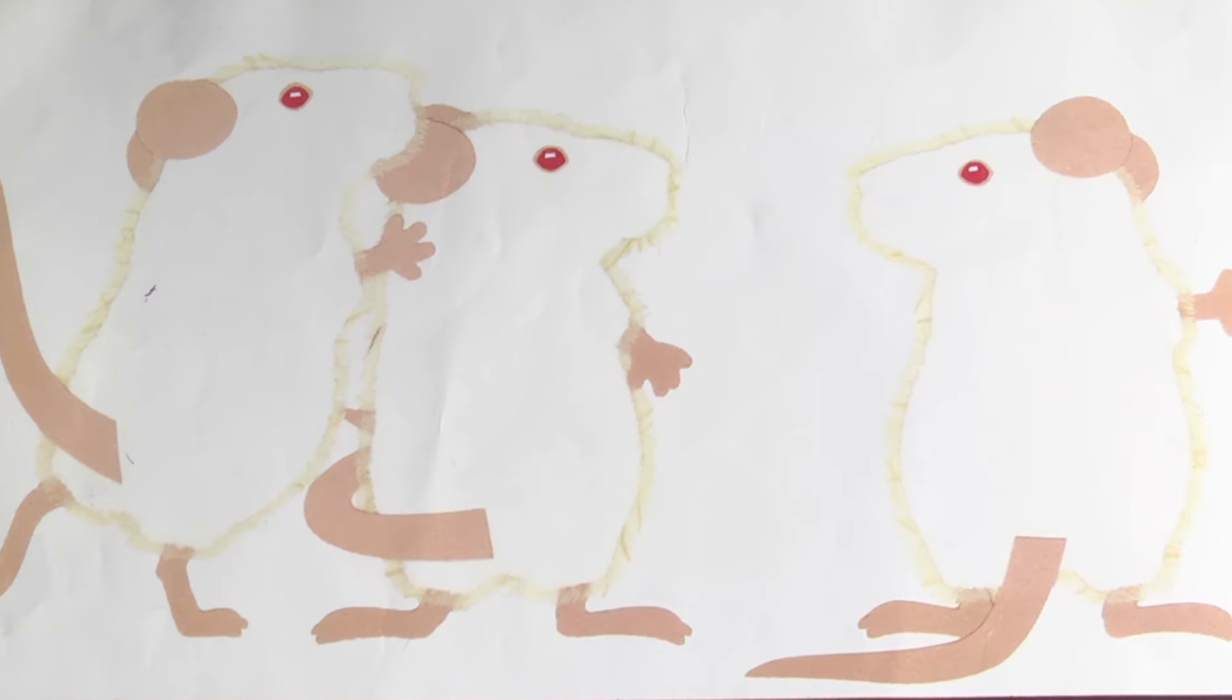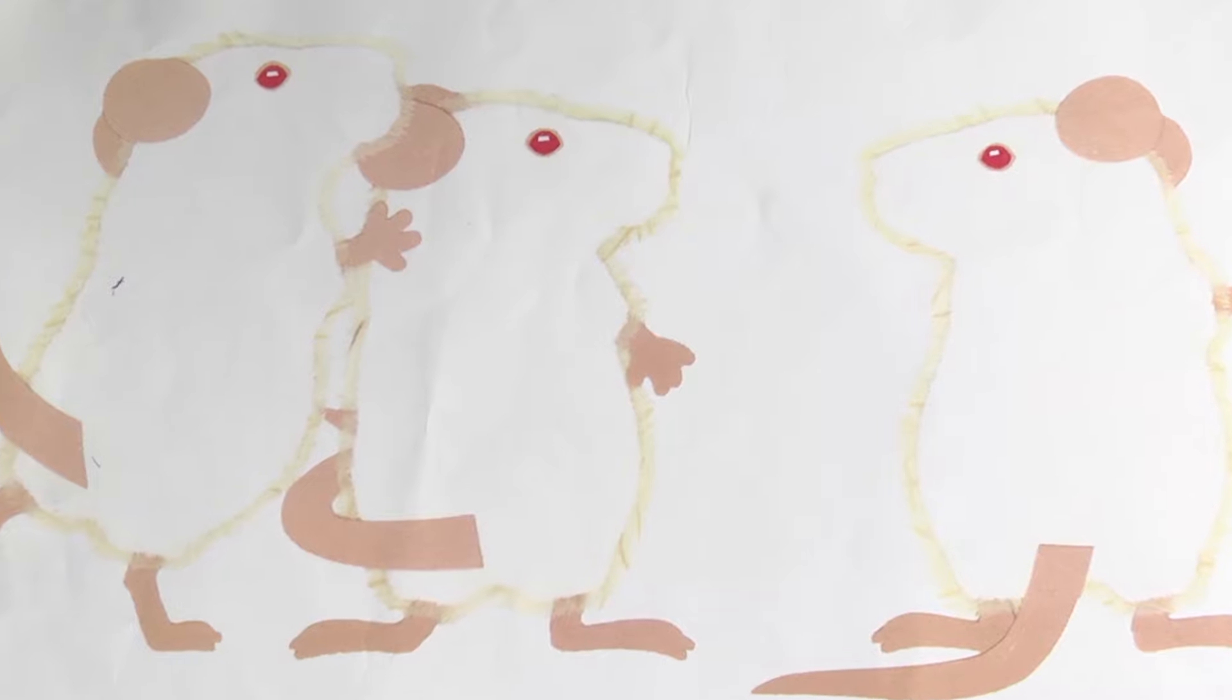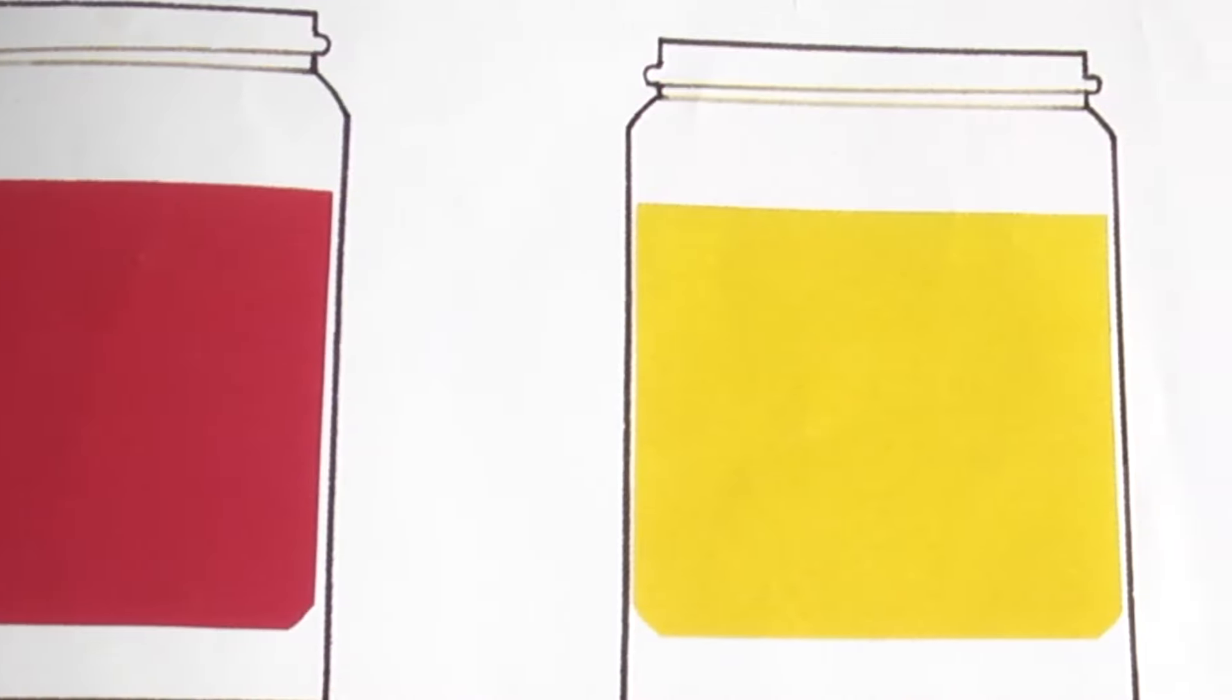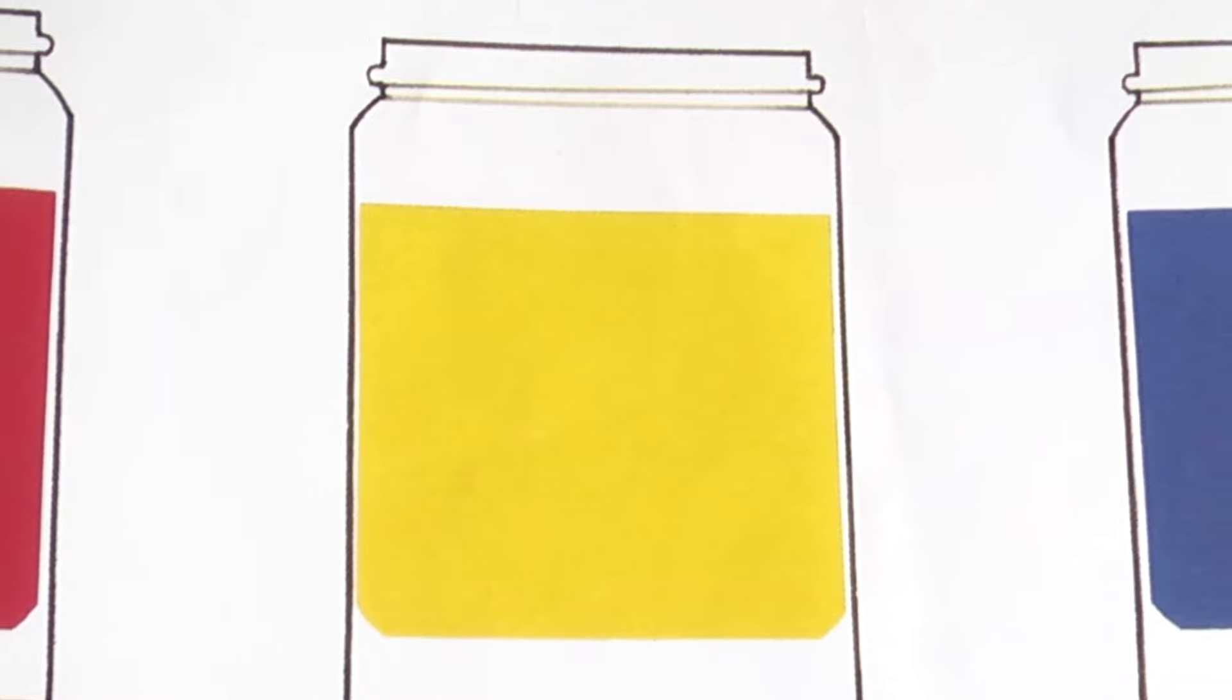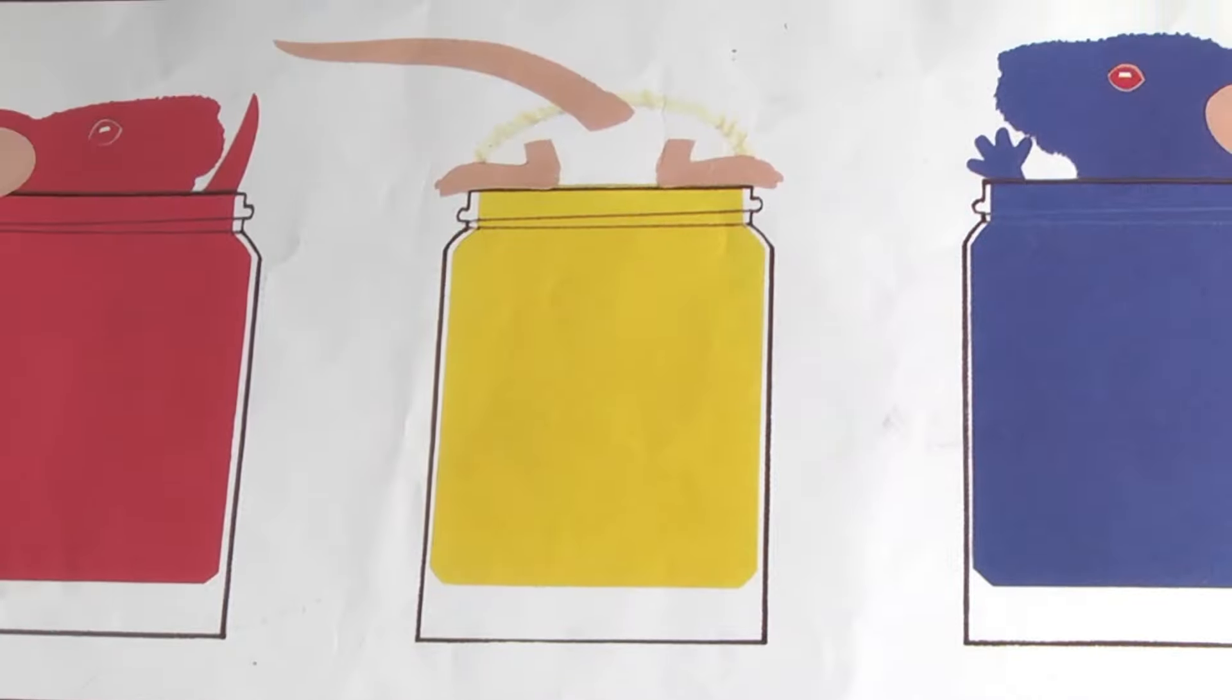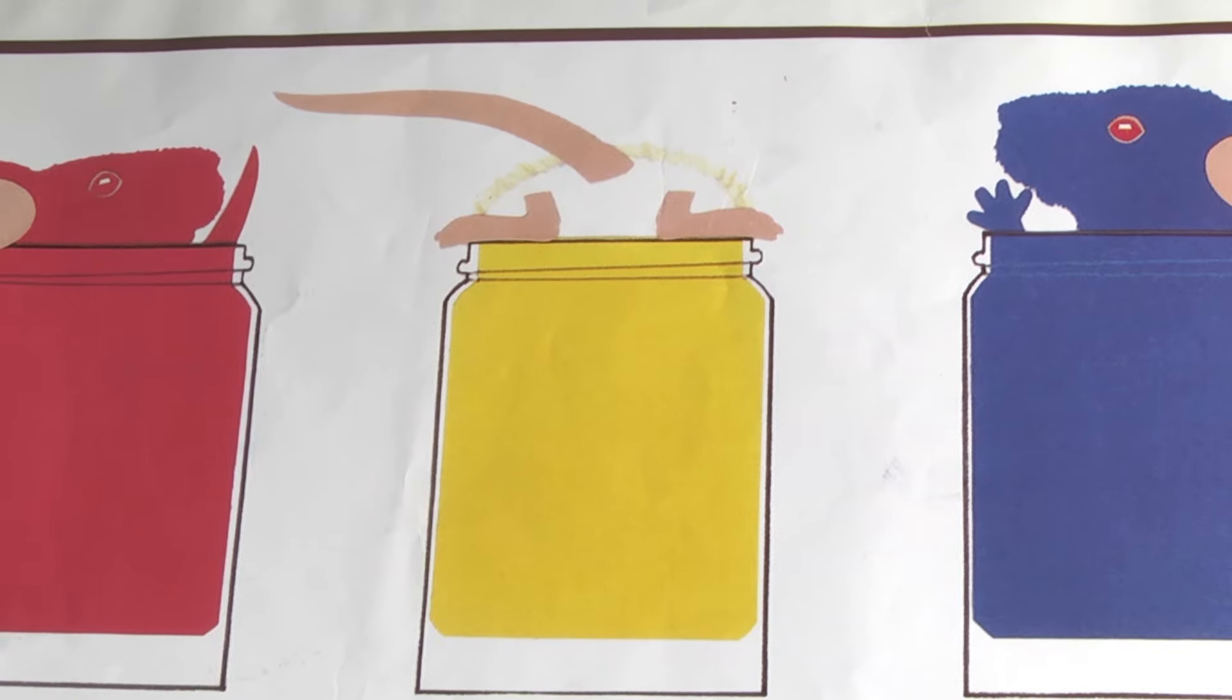One day, while the cat was asleep, the mice saw three jars of paint. One red, one yellow, and one blue. They thought it was mouse paint. They climbed right in.